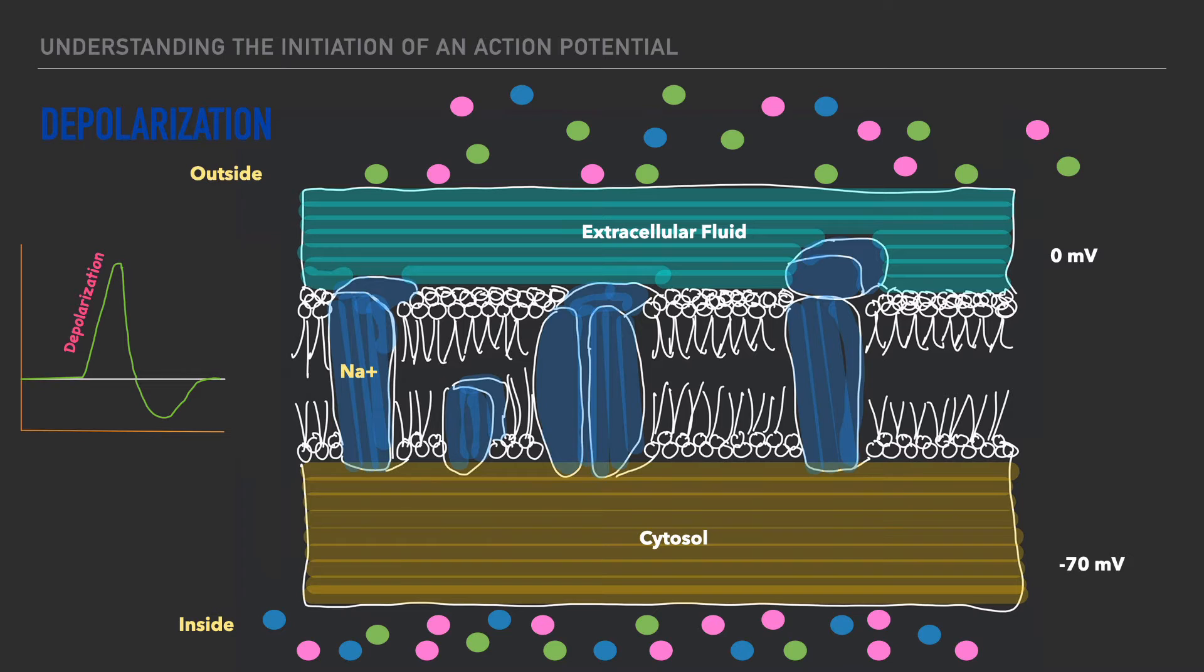Keep in mind that depolarization is analogous to a term we created called D-negative, which means that the inside of the cell becomes more positive. So looking at the graph to the left, we go from our resting membrane potential, which was negative 70 millivolts, to at least negative 55 millivolts because of a strong enough stimulus.